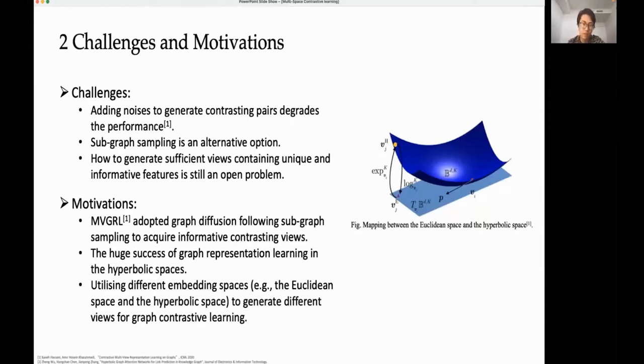Nevertheless, how to generate sufficient views containing unique and informative features is an open problem. Inspired by recent progress of geometric graph mining in hyperbolic space, which has achieved satisfactory results on various real-world scenarios, we innovatively utilize the greater expressiveness of different embedding spaces, including hyperbolic space and Euclidean space, to generate multiple views of the input graph.